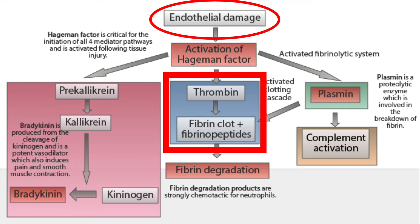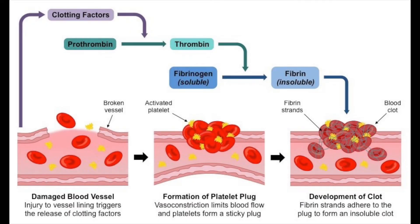This would also result in the release of the protein prothrombin from endothelial cells. The activation of the Hageman factor will result in the activation of thrombin by the cleavage of prothrombin. Released thrombin results in the production of insoluble fibrin via the cleavage of its precursor fibrinogen. Fibrin will then help the formation of clots in the damaged area and the formation of fibrinopeptides.